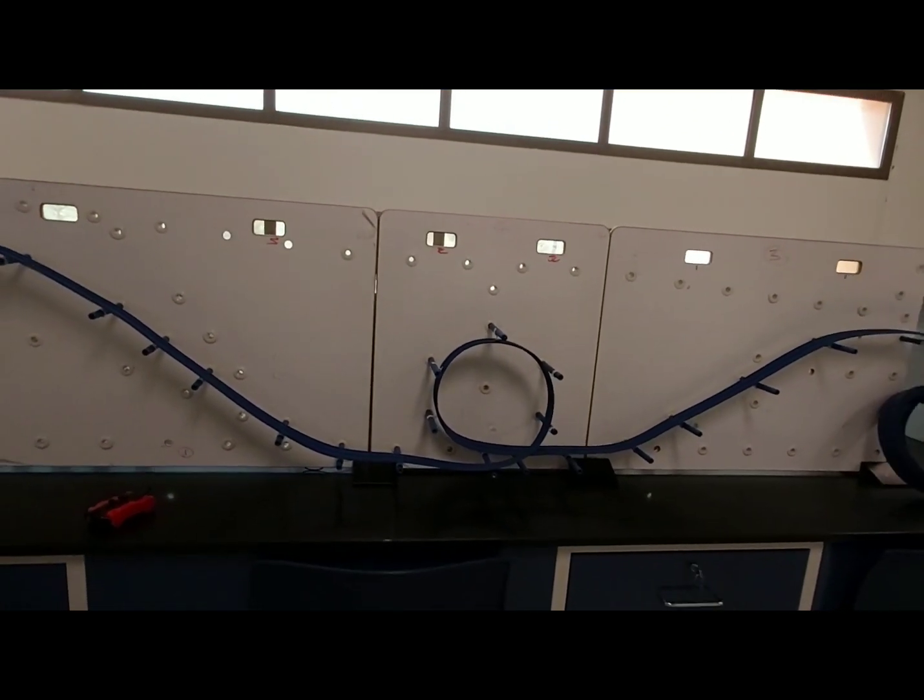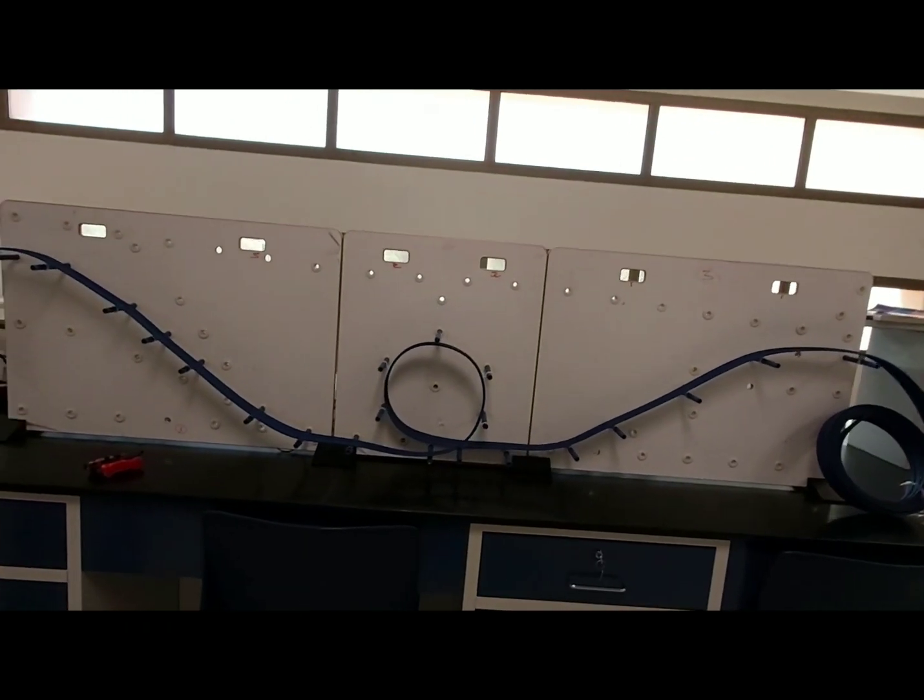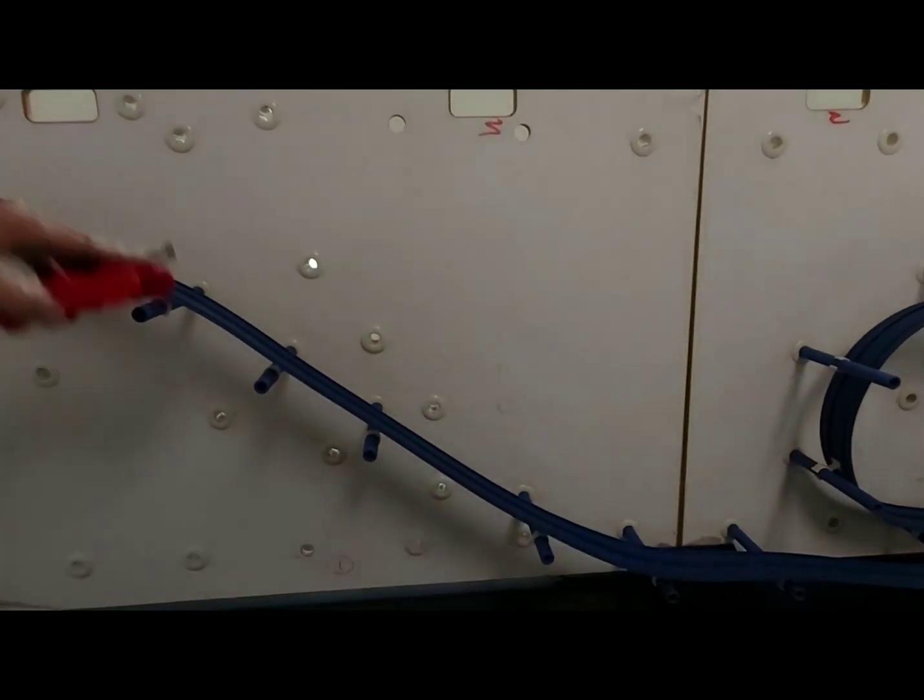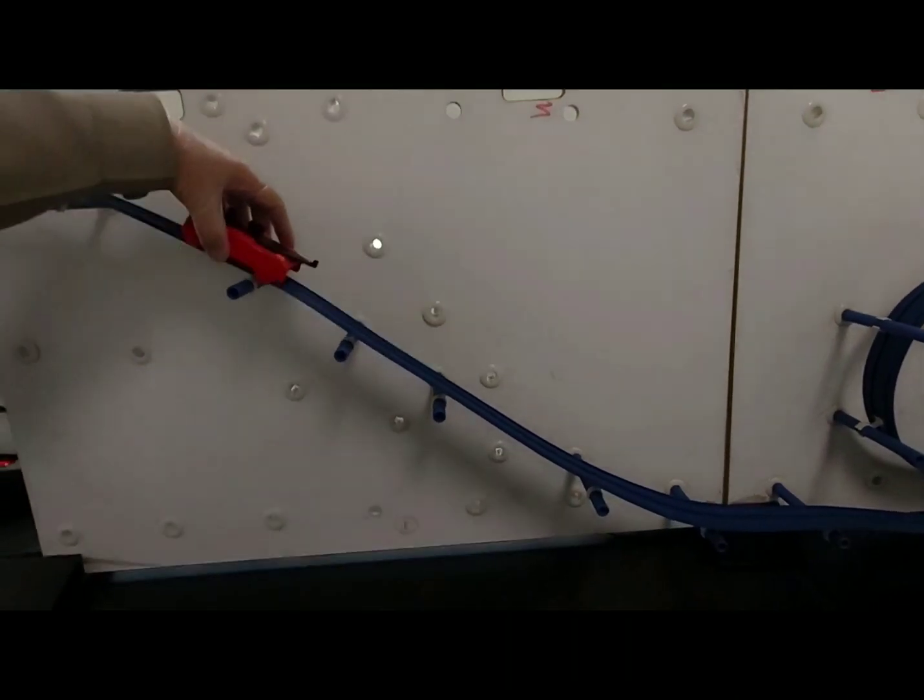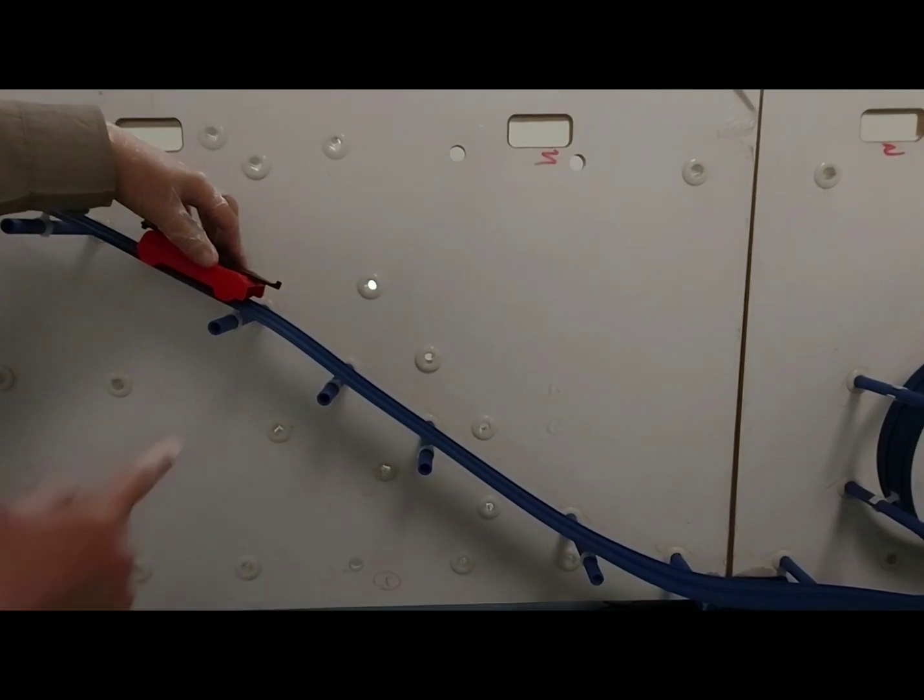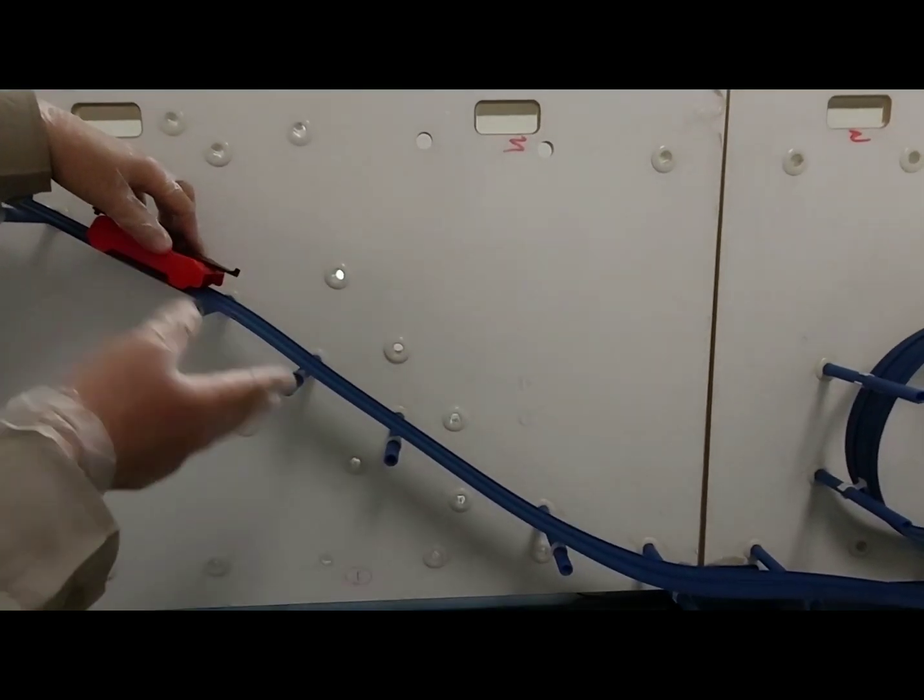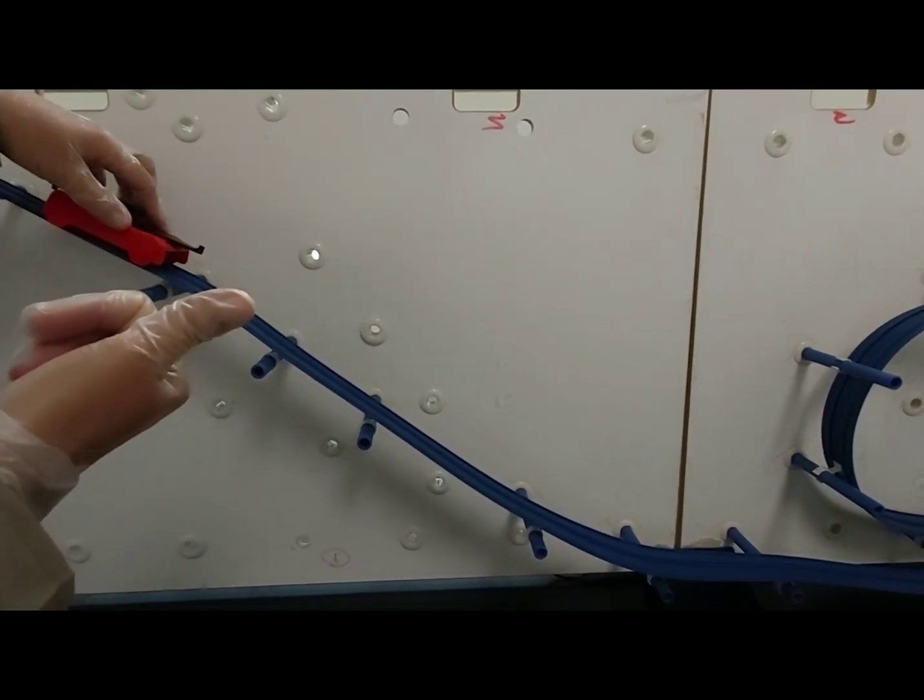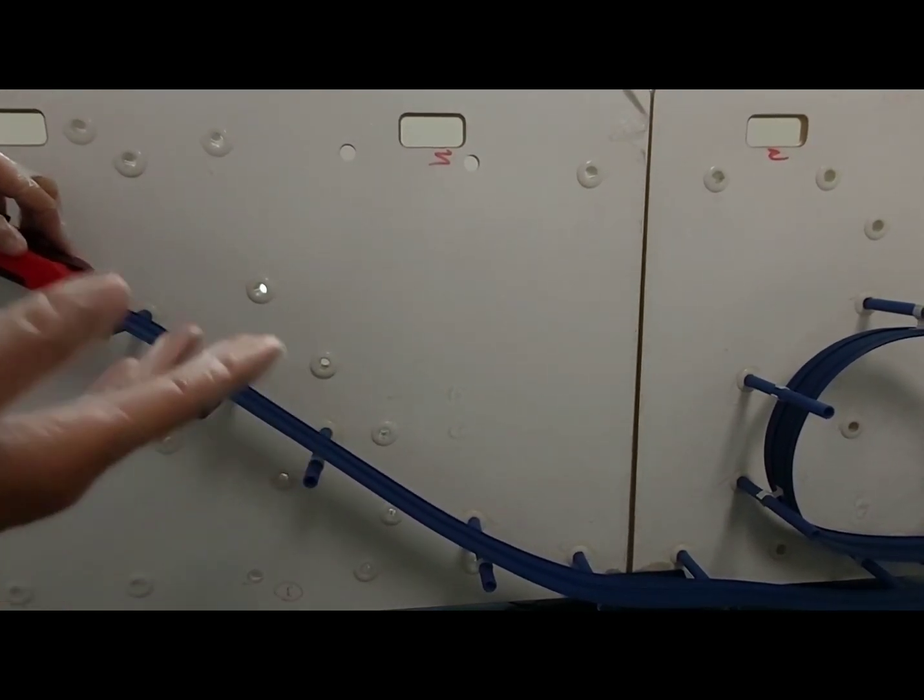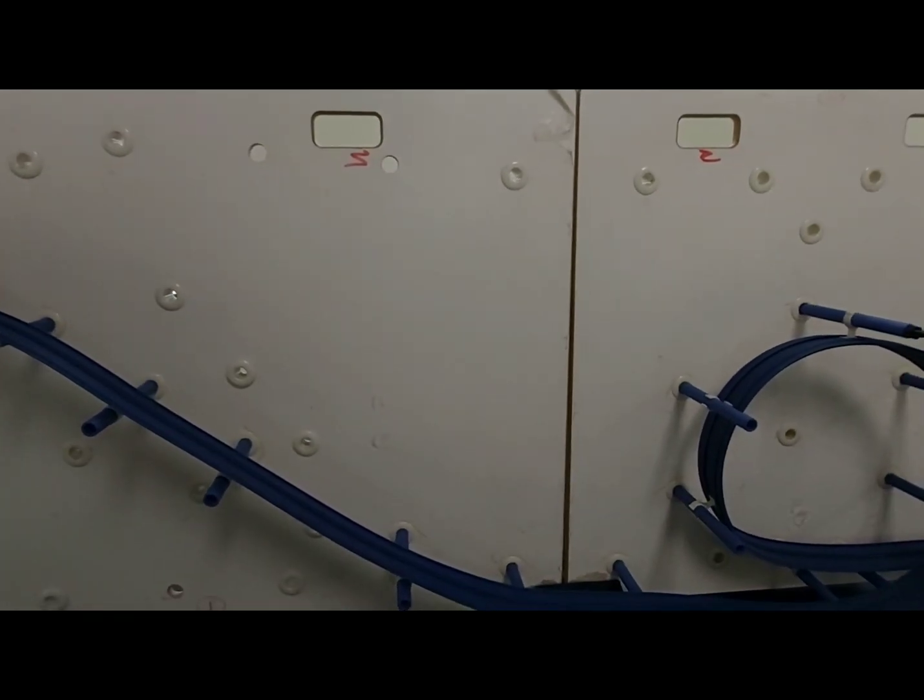But if you exactly calculate this height, it will still not work. Suppose this is the exact height you calculated at this position, still it will not work. Why? Because there is some friction on the track. In the ideal case it will work because the formula is ideal. Now if you put it a little bit above, then it will complete the circuit.